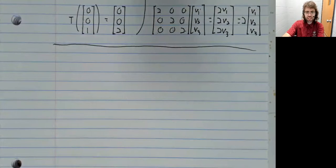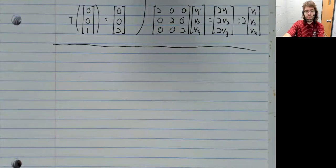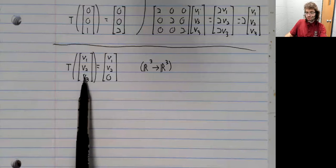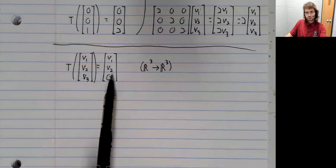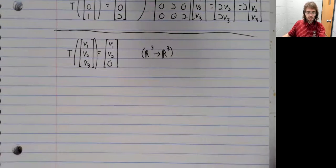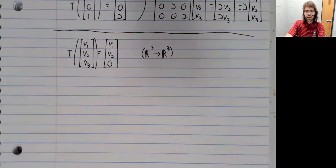Our second example. We demonstrated that this transformation that just turns the third element of this vector to zero is linear. Let's once again find the matrix of this linear transformation.